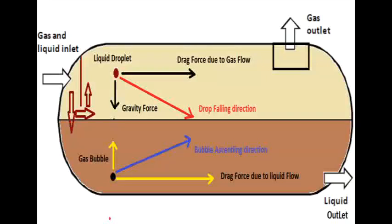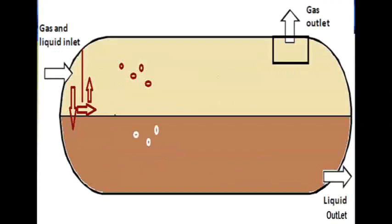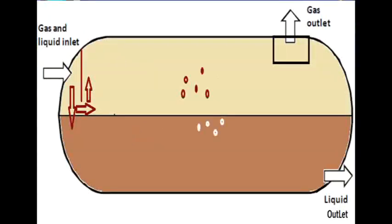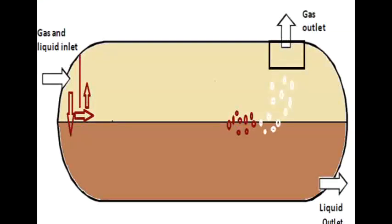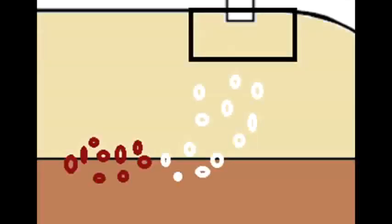For gas bubbles entrained in the liquid stream, due to the density difference, the gas bubble will ascend from the liquid zone to the gas area. Due to the viscosity of the surrounding liquid, the gas bubble will take much more time to ascend than the time required for liquid droplets to fall. A gas bubble may need up to 4 minutes to ascend and leave the liquid surface, depending on liquid viscosity. Therefore, liquid residence time in two-phase separators typically ranges from 1 minute for light crude oil to about 4 minutes for high-viscosity crude oil.